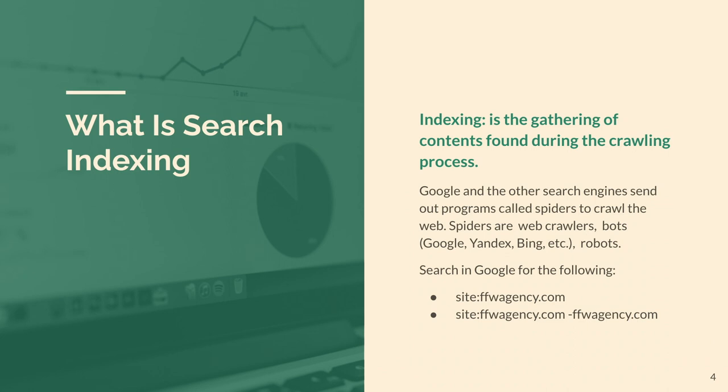First of all, what is search indexing? This is when we have content on our website — on our web property — and a crawler tries to aggregate the data from your website and pass it to the search engines. Search engines analyze the data and provide people who are searching across the web with relevant results based on keywords. Google and other search engines use specific spiders to crawl websites.